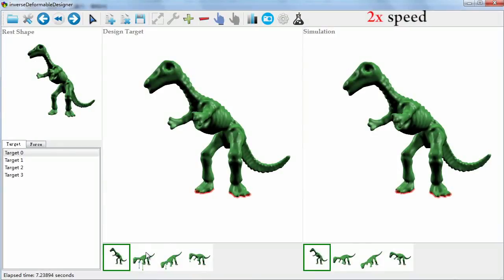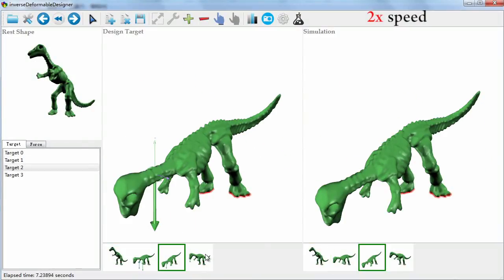Finally, the user can use our fast static equilibrium solver to check the differences between the results and their desired shapes.